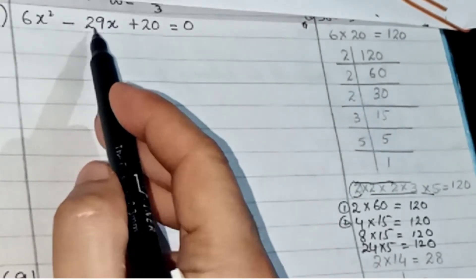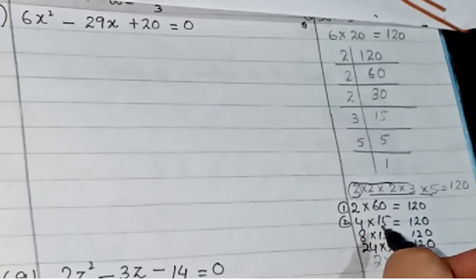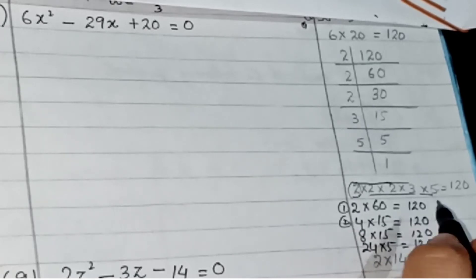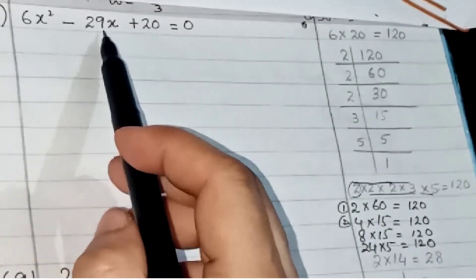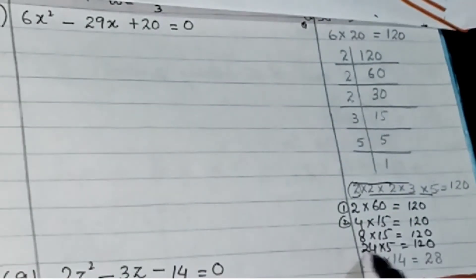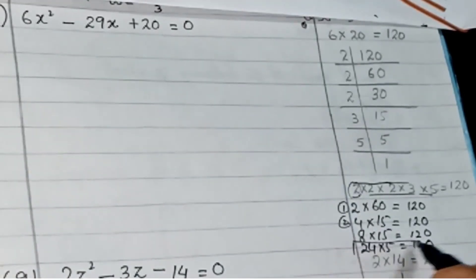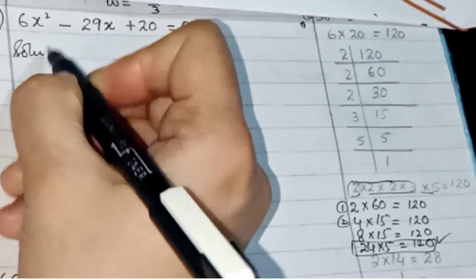60 plus 2 gives 62, so we can't choose that pair. 15 plus 4 gives 19, so no. 15 plus 8 gives 23, but we need 29. 24 plus 5 gives 29, so we choose the pair 24 and 5 to split the middle term.